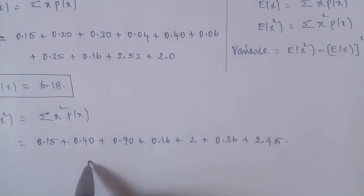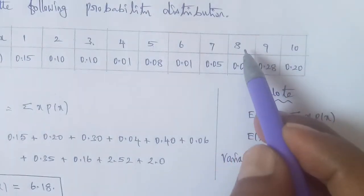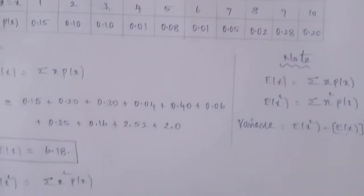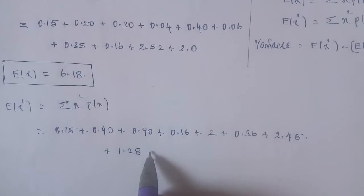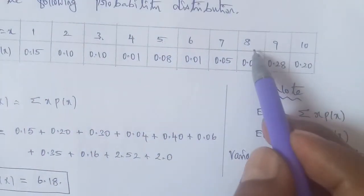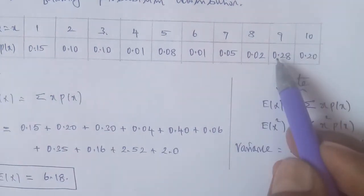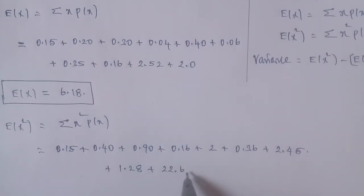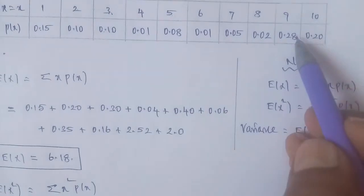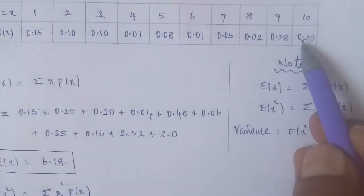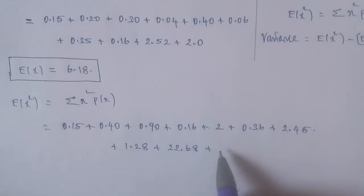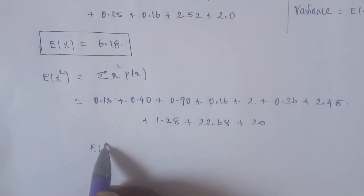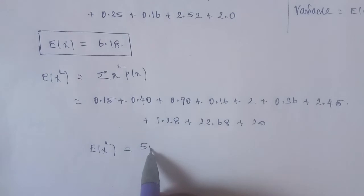For x = 8: 8² = 64, 64 × 0.02 = 1.28. For x = 9: 9² = 81, 81 × 0.28 = 22.68. For x = 10: 10² = 100, 100 × 0.20 = 20.00. Therefore, E(x²) = 50.38.